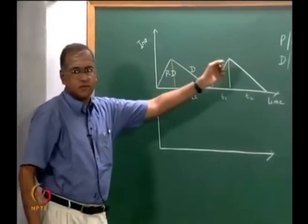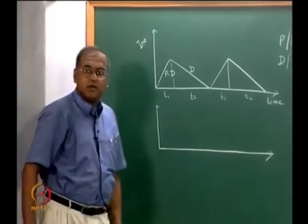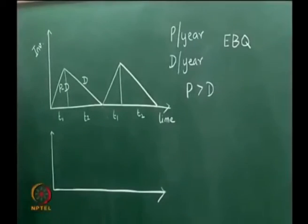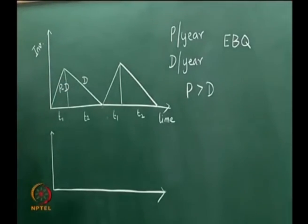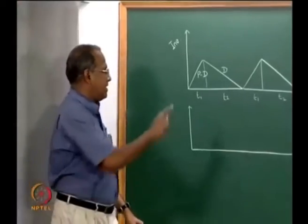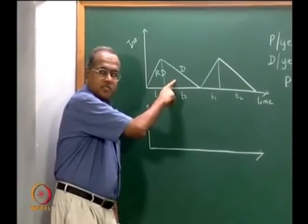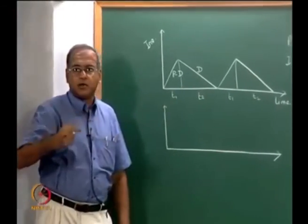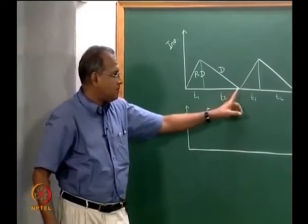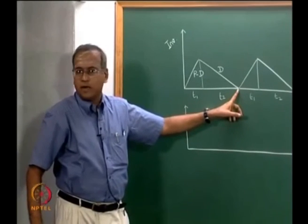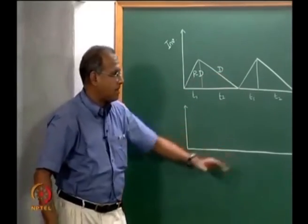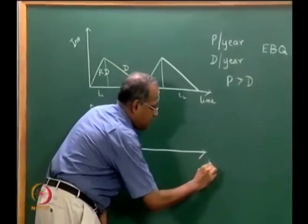So we derived expressions for the economic batch quantity. Now we will look at what happens to the economic batch quantity if we allow back ordering. In the earlier version or in the earlier model, we did not allow back ordering. So we started producing as soon as the stock reaches 0, so there is no back ordering. Now, if we allow back ordering for the same item.